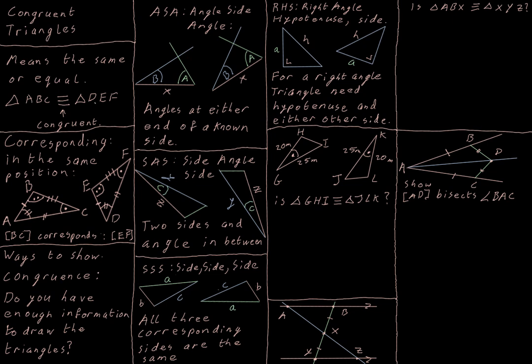The symbol for congruence looks quite like an equal sign — it just has an extra line in it. So if we were going to say that two triangles were the same as each other, we would say they were congruent and we would use three lines for our equal sign.